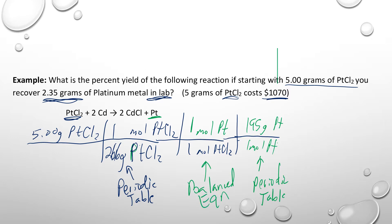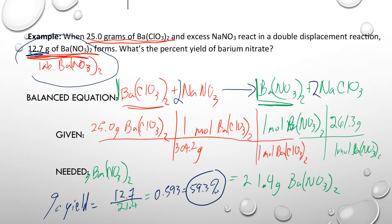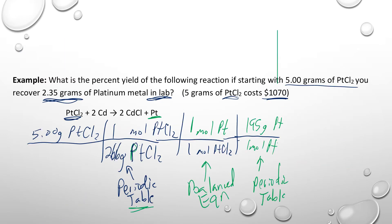Think about the stoichiometry highway: start with grams of one substance, convert to moles using the periodic table, go from moles of one substance to moles of another using the balanced equation, then use the periodic table again to get back to grams. That's exactly what we've done in both examples — periodic table, balanced equation, periodic table.